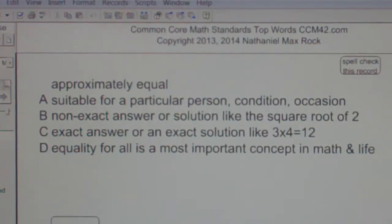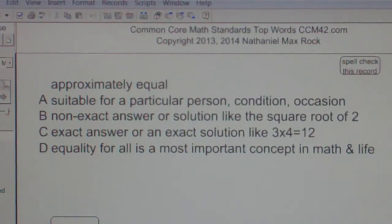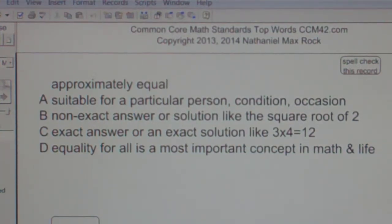Multiple choice question: Approximately equal. A. Suitable for a particular person, condition, or occasion. B. Non-exact answer or solution like the square root of 2.